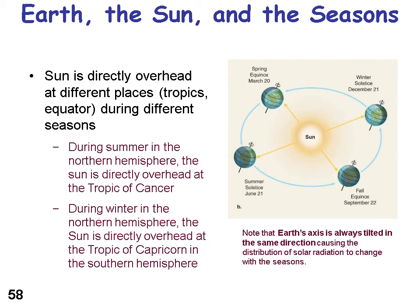Cancer is in the Northern Hemisphere, so the sun is directly overhead at the summer solstice over the Tropic of Cancer. In the winter solstice, it is directly overhead at the Tropic of Capricorn. The sun is directly overhead at different places in the tropics during different seasons.